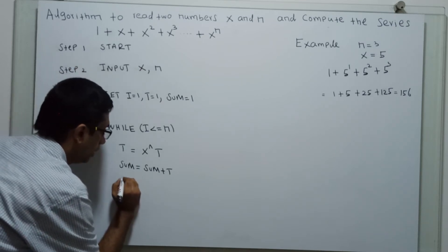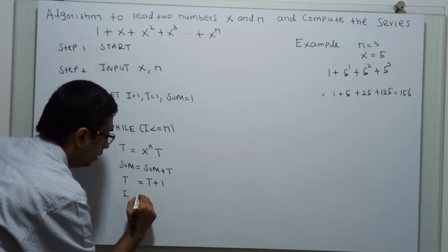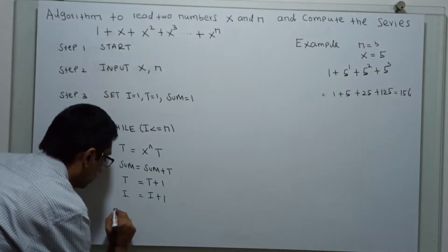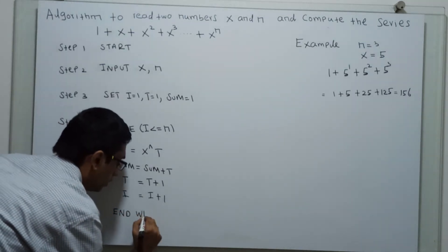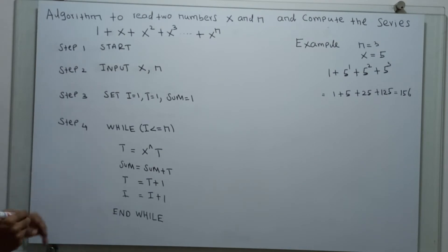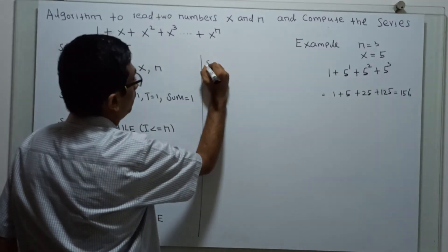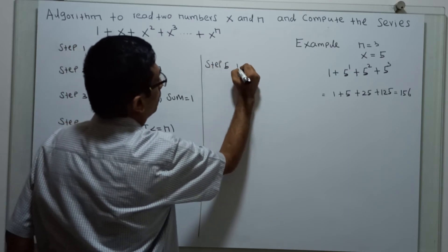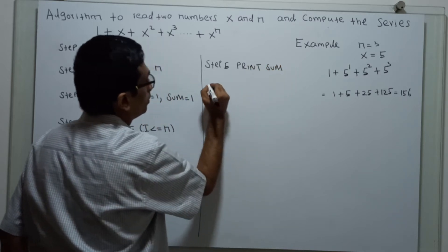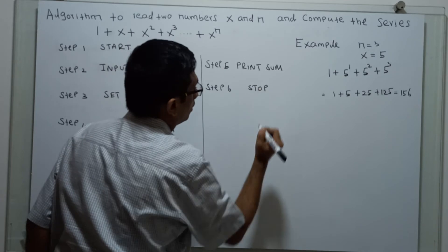Then increment: i equal to i plus 1. Step 5: Print the value of sum. Step 6 is the logical stop.